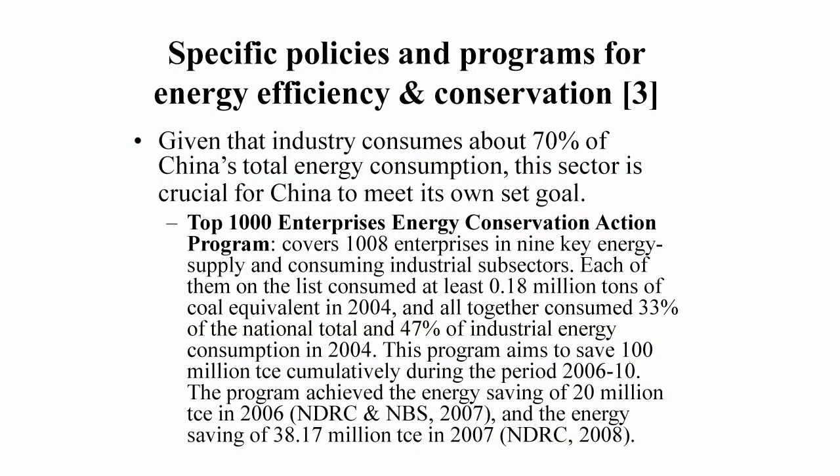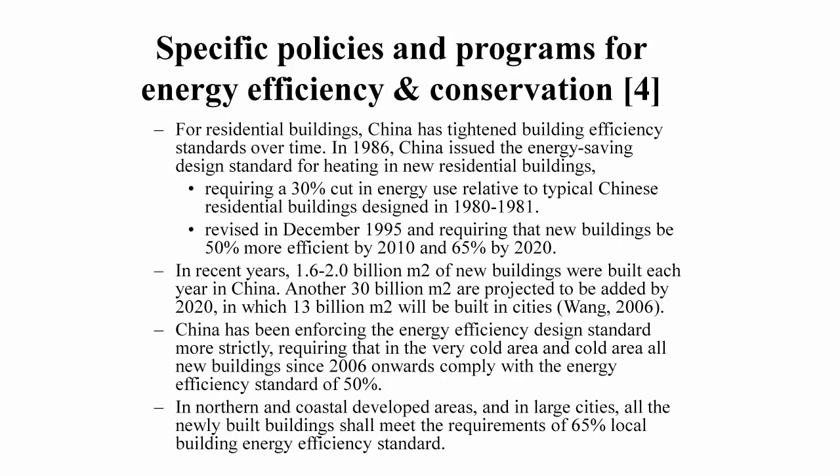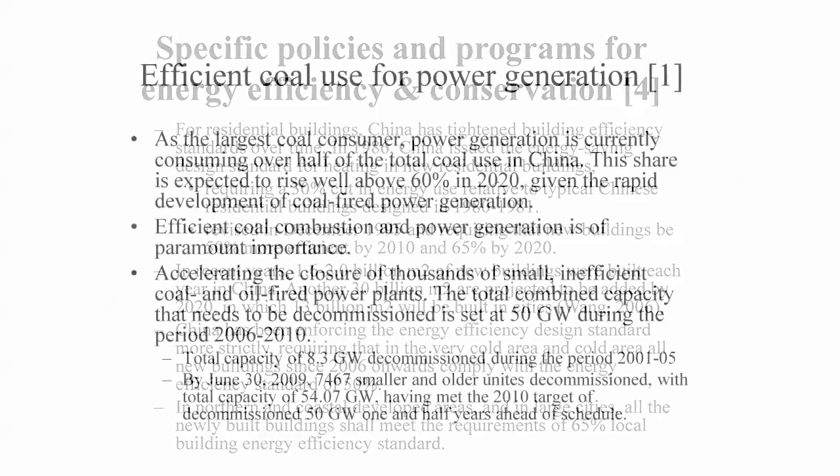On the industry-specific side, since industry and consumers account for 70% of energy use, how industry performs is significant for meeting the country's target. The government set up the so-called 10,000 energy conservation program, picking about 1,000 larger corporations which consume about one-third of national energy consumption and half of industrial energy use, requiring all these enterprises to be accountable for their energy use. On the buildings side, all new buildings in cold areas have had to be 50% more energy efficient since 2006 compared to buildings from the early 1980s, and in many cities the standard is 65%.